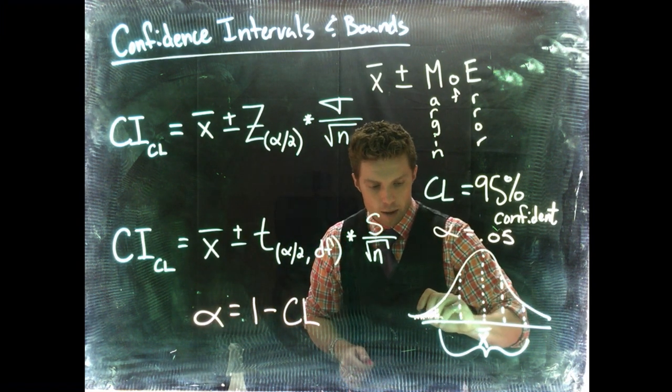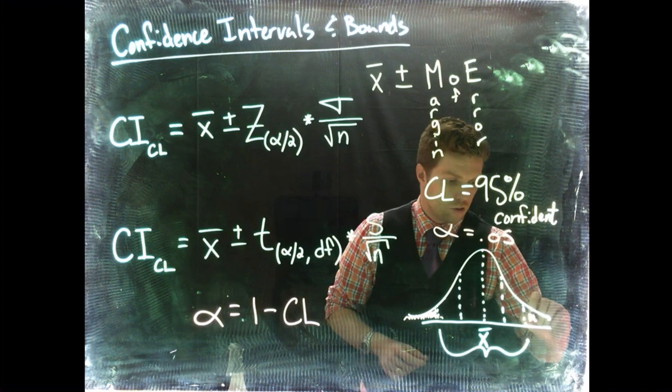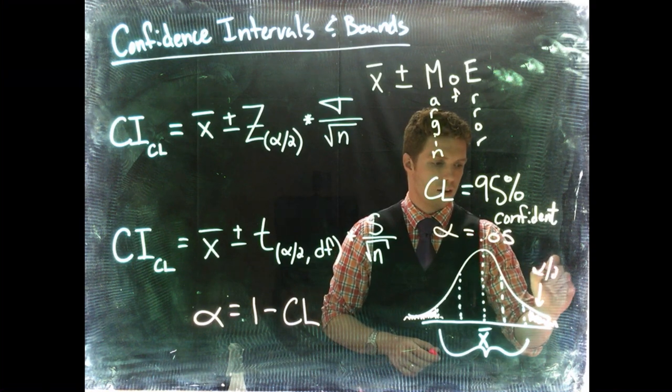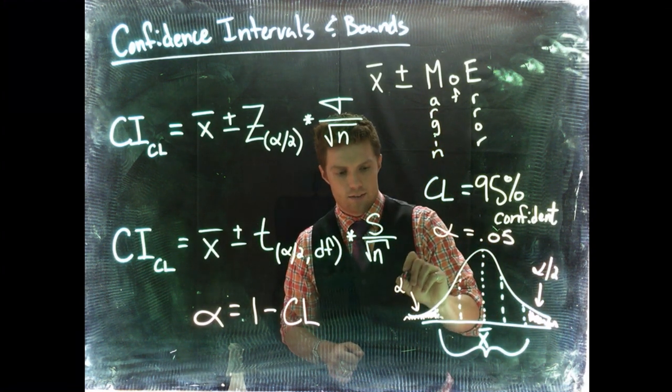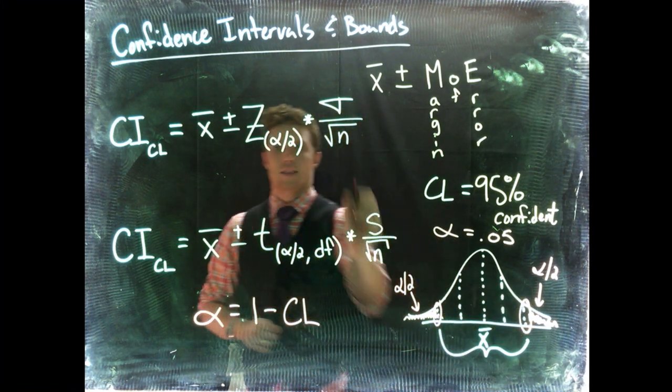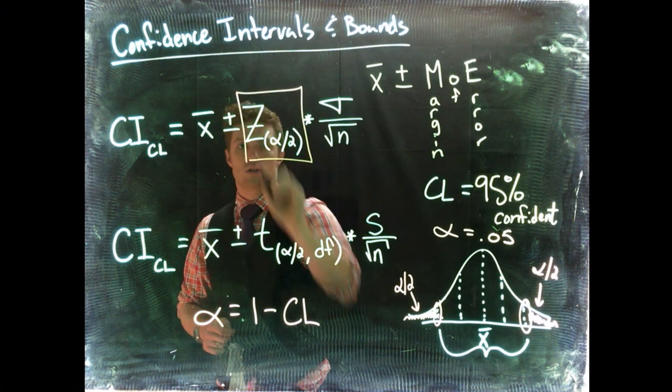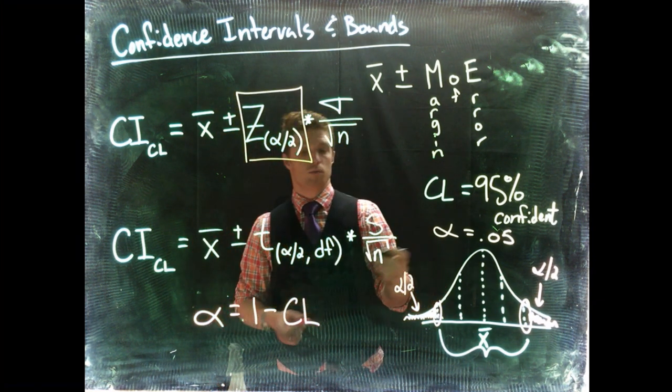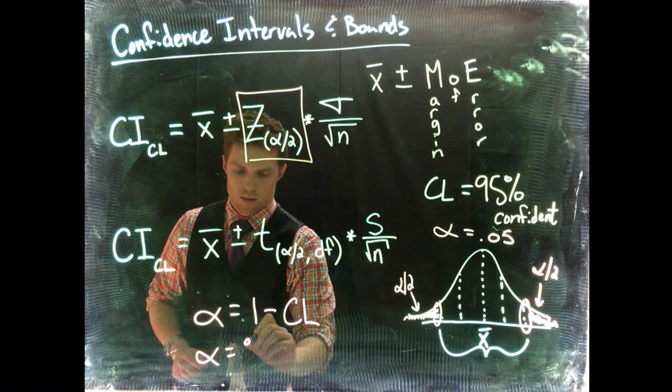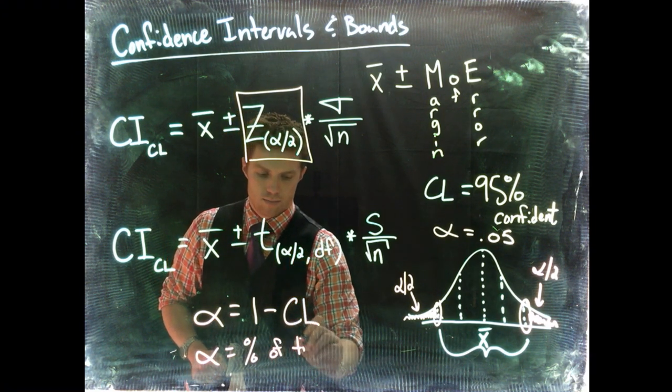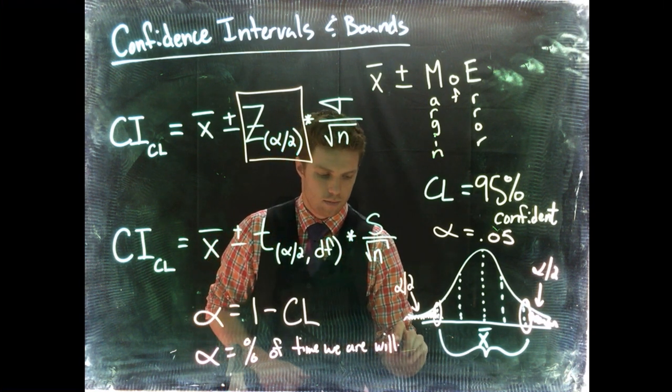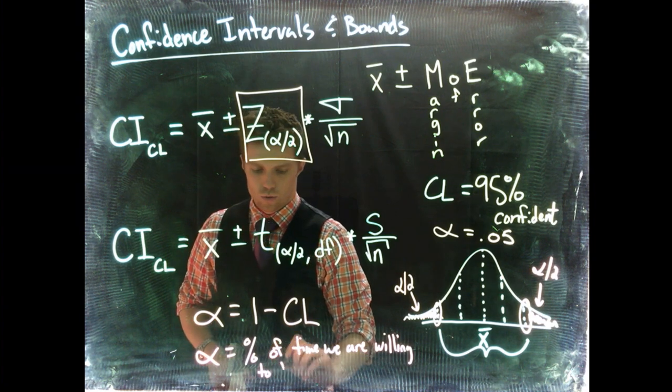Well what this is saying when we do alpha divided by 2 is we're doing this two-tailed test where this little area right over here is alpha divided by 2 and this guy is alpha divided by 2. It's letting us know where our critical points are. And this tells us the associated critical z value for those alphas. And even more generally, what is alpha? Alpha is equal to the percent of time we are willing to be wrong.